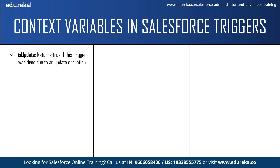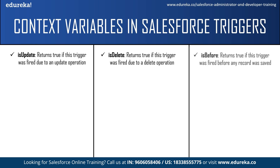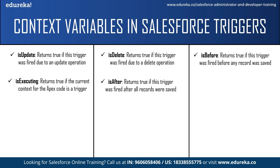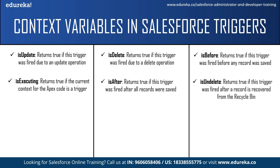isDelete returns true if the trigger was fired due to a delete operation. isBefore returns true if the trigger was fired before a record was saved to the database. isExecuting returns true if the current context for the Apex code is a trigger and not a Visualforce page, web service, or API call. isAfter returns true if the trigger was fired after all records were saved to the database. isUndelete returns true if the trigger was fired after a record was recovered from the recycle bin.